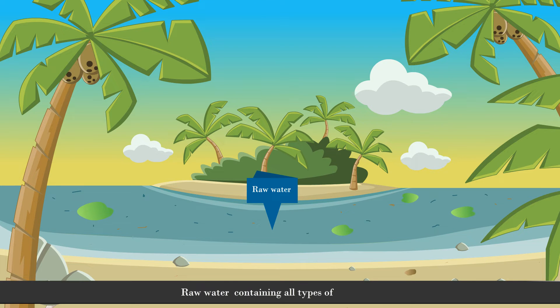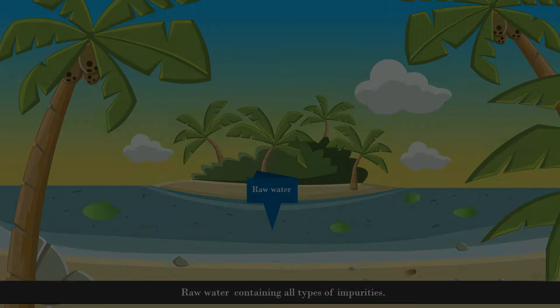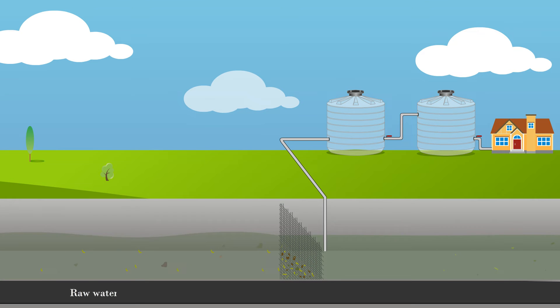Raw water contains all types of impurities. Raw water is allowed to pass through a mesh. In the process, all larger impurities are filtered.